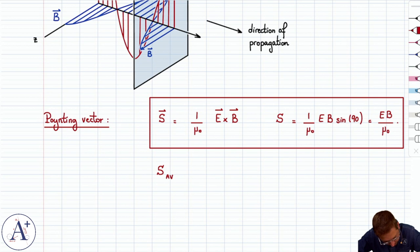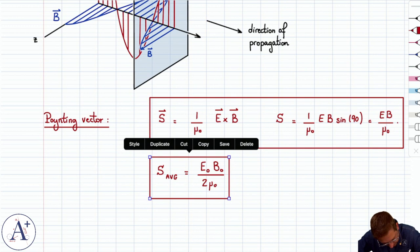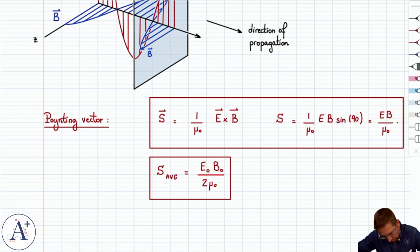S in and of itself is actually the instantaneous intensity, but we can average this quantity. And the average intensity associated with an EM wave is going to be equal to E₀ B₀, those are the amplitudes, divided by 2μ₀. It's not directly clear how we got from S to S average, although we could potentially go over the math. The point is that if we do proper averaging, we will get the average intensity, which is E₀ B₀ divided by 2μ₀.